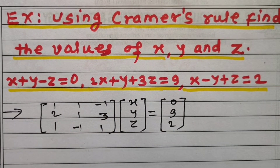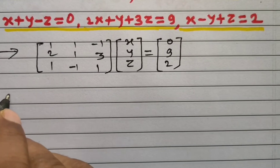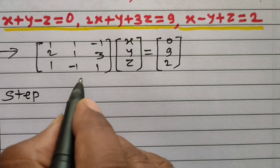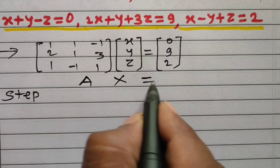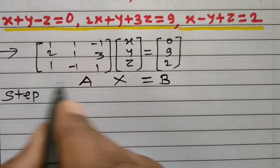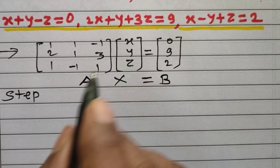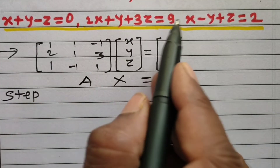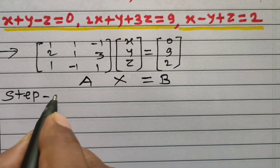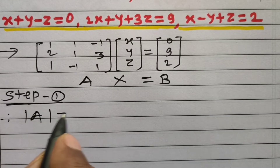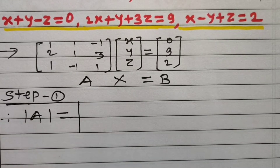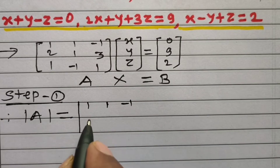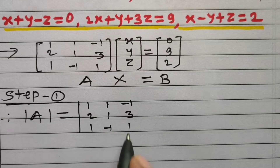Now, step number 1. In this step, we have to find out the determinant value of matrix A. We can represent A times x equals B, where A is the matrix of coefficients, x is the column matrix of variables, and B is the column matrix of constants appearing on the right hand side. The determinant of A is set up as: row 1: 1, 1, minus 1; row 2: 2, 1, 3; row 3: 1, minus 1, 1.